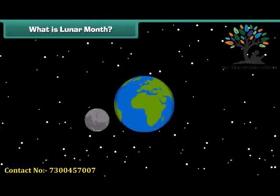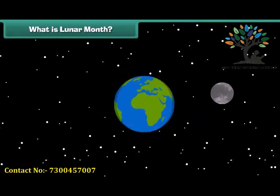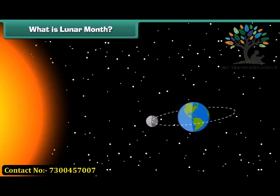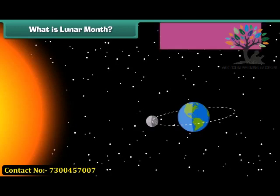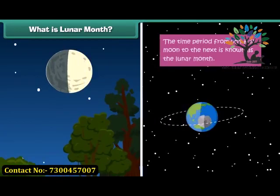The moon takes 27.3 days to orbit the Earth, but the time from one full moon to the next is 29.5 days, because the Earth is also constantly moving and orbiting the Sun. We call this period from one full moon to the next the lunar month.